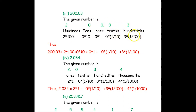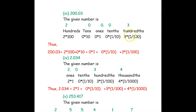In 200.03 we have 2 hundreds, 0 tens, 0 ones, 0 tenths, and 3 hundredths. So: 2 × 100 + 0 × 10 + 0 × 1 + 0 × (1/10) + 3 × (1/100). The expanded form of 200.03 is 2 × 100 + 0 × 10 + 0 × 1 + 0 × (1/10) + 3 × (1/100).